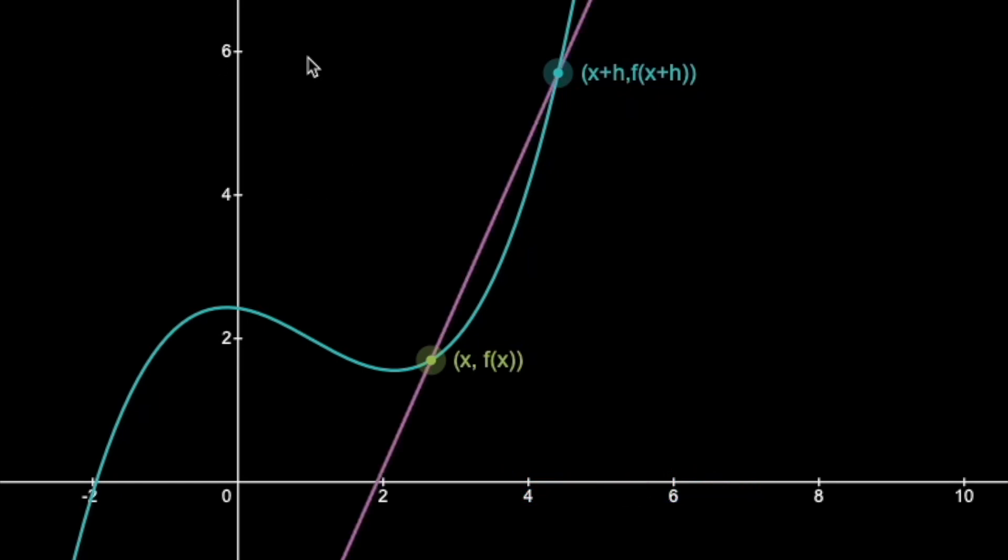We can find the slope of this line. That's great, but what happens when we start bringing these points ever closer together?